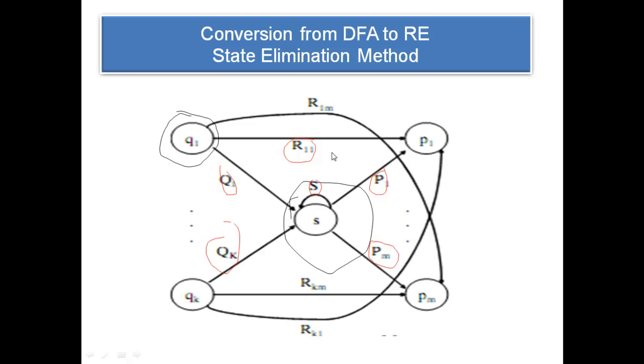If you clearly look at, if I want to move myself from Q1 to P1, what are the possibilities? Either I can go through this by reading the edge R11, or else I can come to S by reading the edge Q1. I can repeat S any number of times and I can reach P1 by means of P. So what is the ultimate regular expression I get? It is R11 plus, this plus is the OR operator you know.